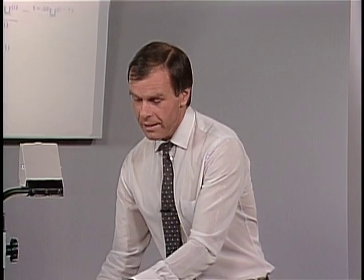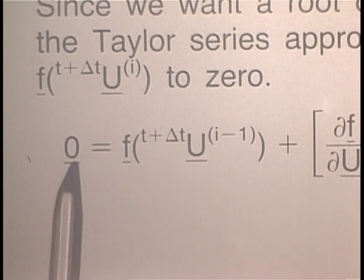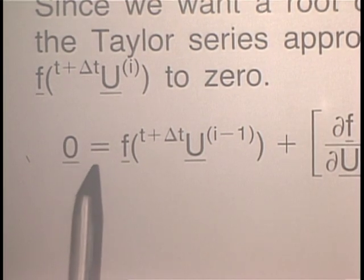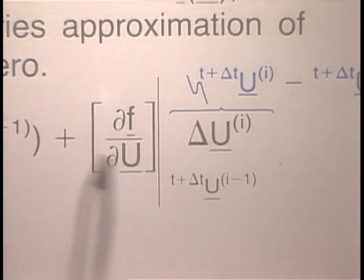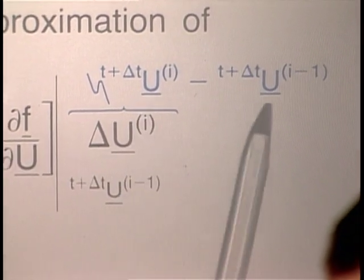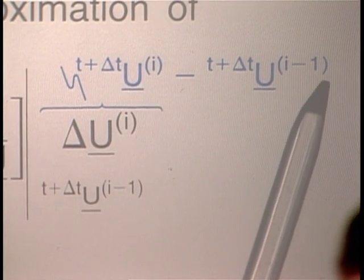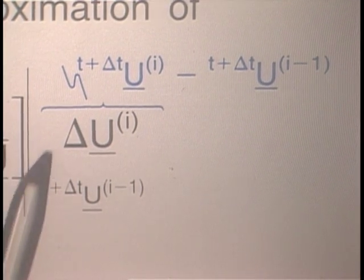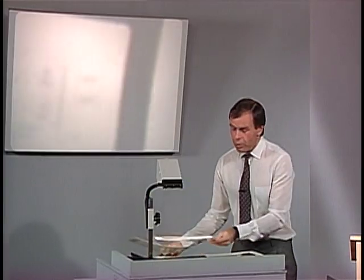If we neglect the higher-order terms, we obtain directly this equation. We set the left-hand side equal to 0 because we are looking for displacement values for which f is 0. On the right-hand side, we have f(t+delta_t u_{i-1}) plus the partial of f with respect to u times delta u. This delta u is what we want to calculate — it is the difference between the u value in iteration i and iteration i-1.